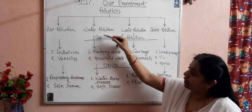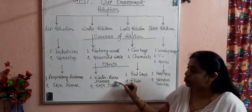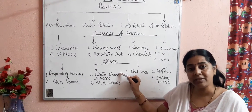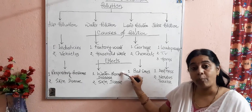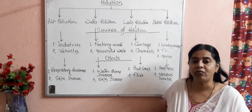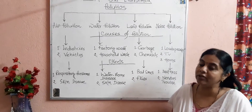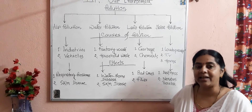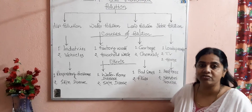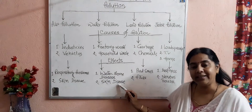The effect of water pollution: water pollution leads to waterborne diseases in human beings, meaning problems in the digestive system. If we drink dirty and contaminated water, we will suffer from diseases like cholera, jaundice, diarrhea, and dysentery, and it also leads to skin diseases.